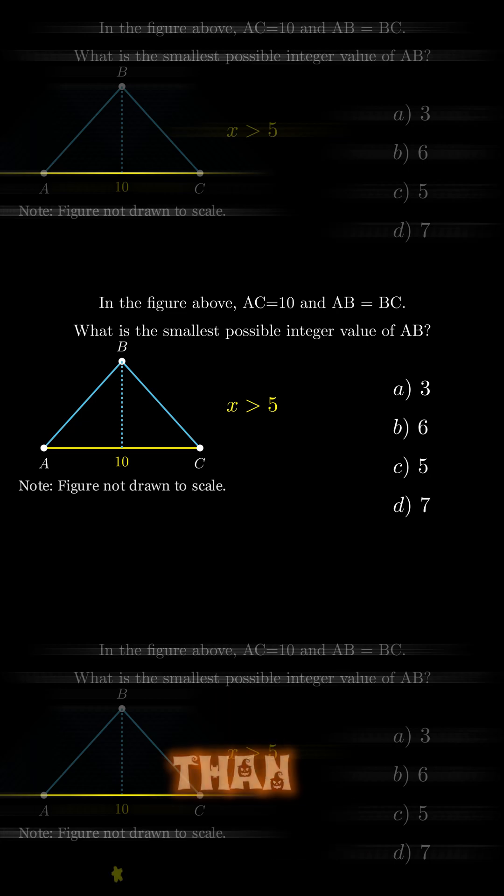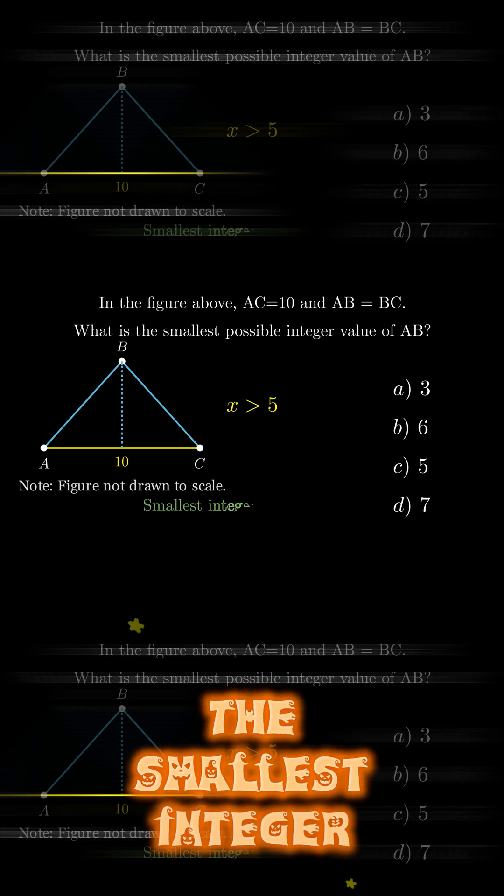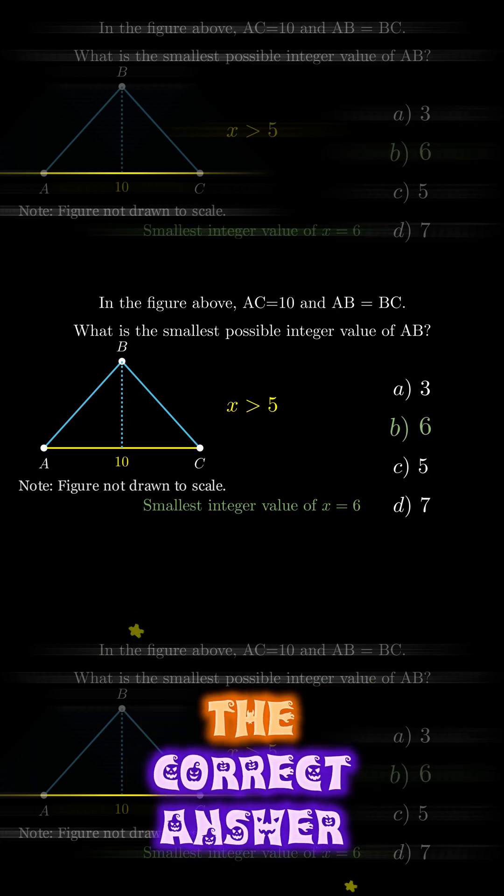So x is greater than 5. The smallest integer greater than 5 is 6. The correct answer is b.